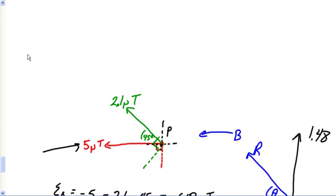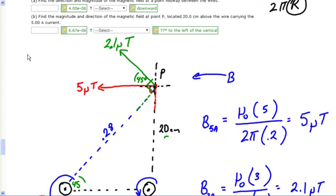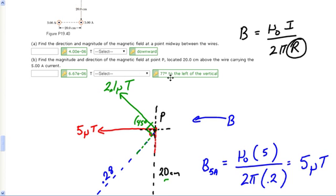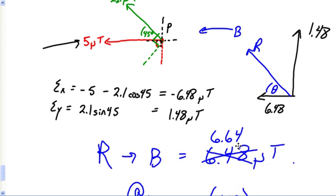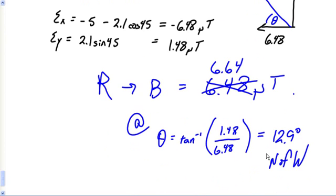Let's go back and see how this looks with their answer in the book. 77 degrees left of the vertical, which would be 13 degrees up from the horizontal - our exact same answer. They got 6.67, we got 6.64. So all in all, we did pretty good on these.